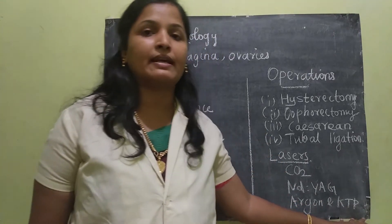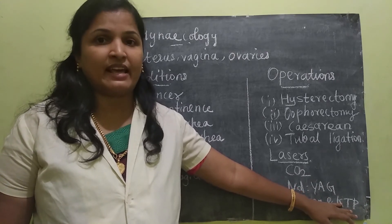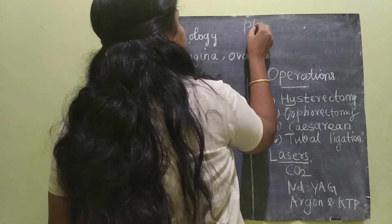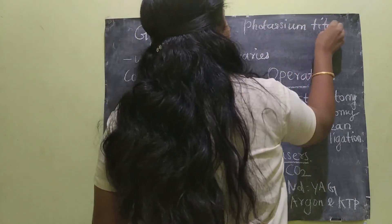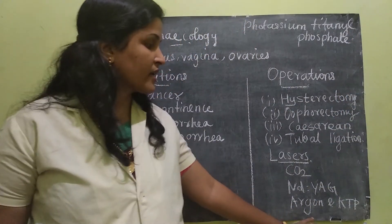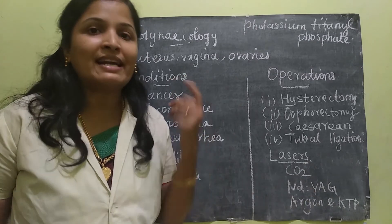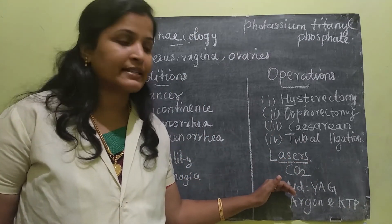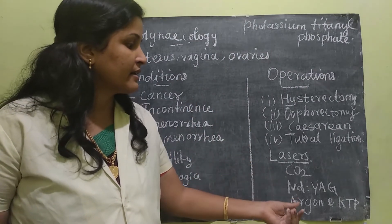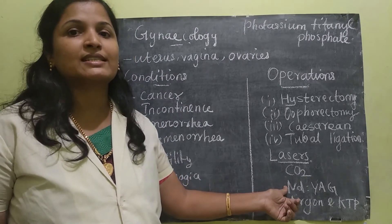The last type is the argon and KTP laser. KTP stands for potassium titanyl phosphate. Argon and KTP lasers are very similar to Nd:YAG lasers in their operations. The only difference is that while Nd:YAG acts as a deep coagulator, argon and KTP lasers are used as color-selective coagulators — meaning they are color-based.